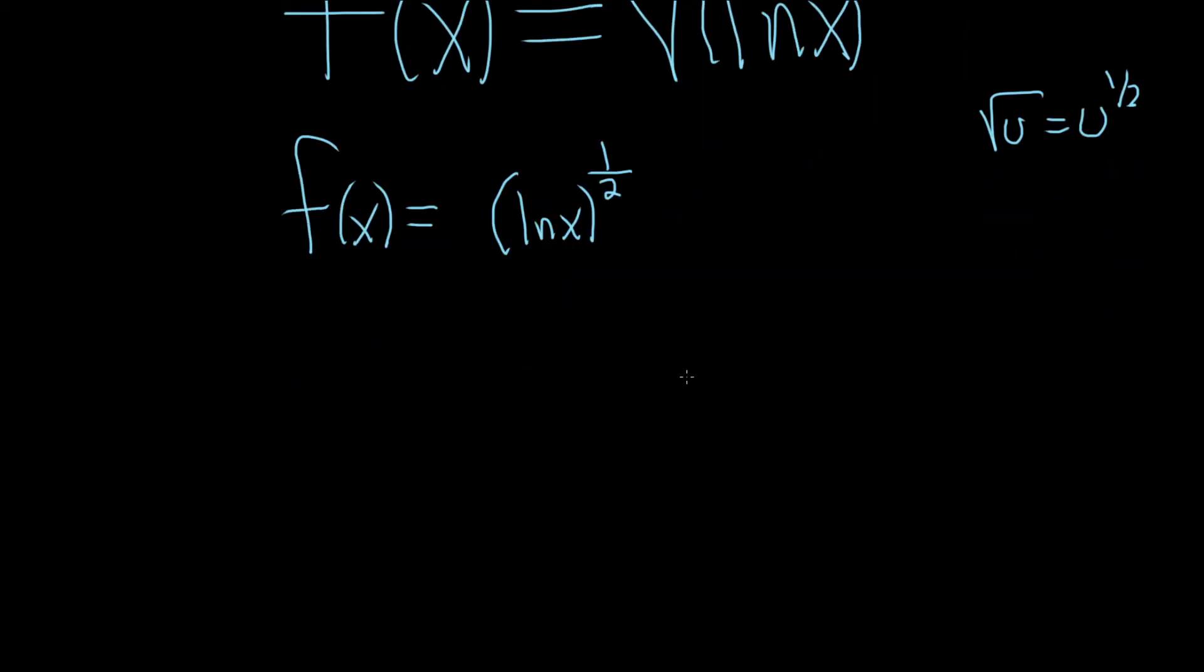So now we can take the derivative, and to do that, we're going to use the chain rule. And the reason we'll use the chain rule is because we have something to a power, and it's not just x. So we'll use the power rule, and then we'll multiply by the derivative of the inside.